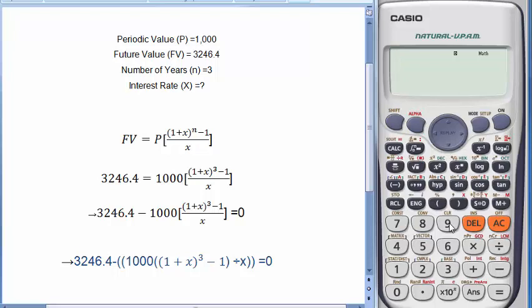I am going to show you how to find rate of interest in annuity using ordinary annuity. Here our periodic value is 1000, future value is 3246.4, number of years equal to 3, and we are going to find out interest rate X.